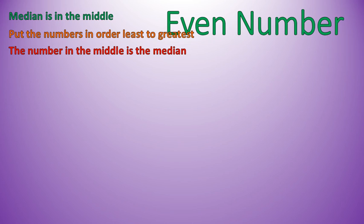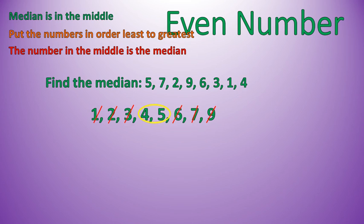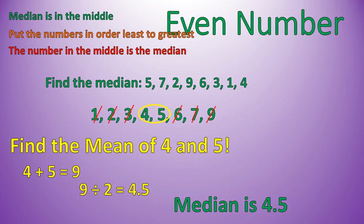Let's look at our next situation with finding the median. Sometimes the hard part is if you have an even number of numbers. This list — 5, 7, 2, 9, 6, 3, 1, 4 — can be organized from least to greatest: 1, 2, 3, 4, 5, 6, 7, 9. When we go into the center, we notice that 4 and 5 are right in the middle. We don't have just one median number, so we have to find the average of those two: 4 plus 5 is 9, divided by 2 is 4.5. Therefore, the median of this entire list is 4.5.